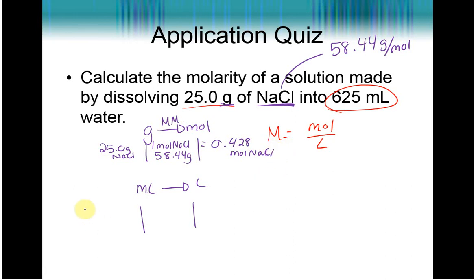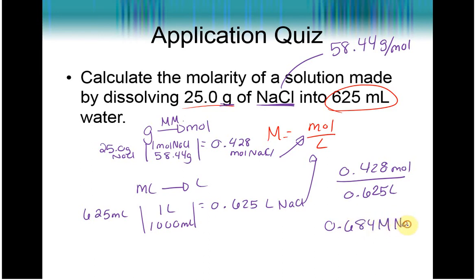On the other hand, we have 625 milliliters. We know every time we have 1,000 milliliters, we get one liter. Dividing, we're going to get 625 milliliters. Excuse me. 0.625 divided by 1,000 gives us 0.625 liters of NaCl solution. So now we have moles. We have liters. We can just divide the 0.428 moles by the 0.625 liters and you're going to get the molarity value of 0.684 molar NaCl.